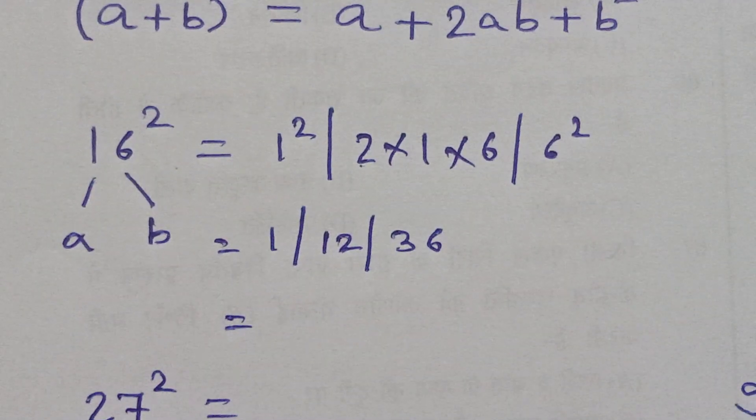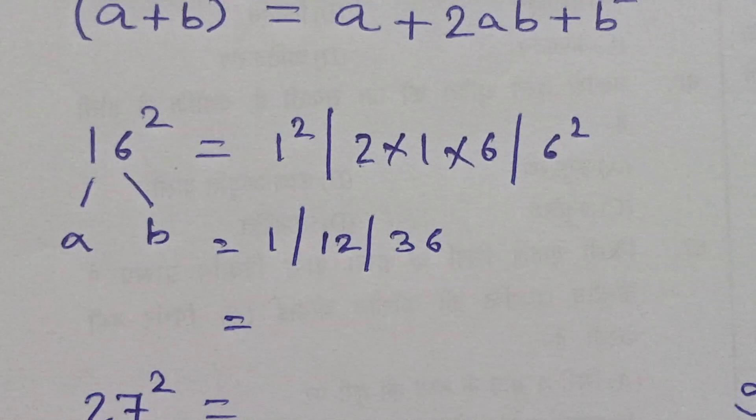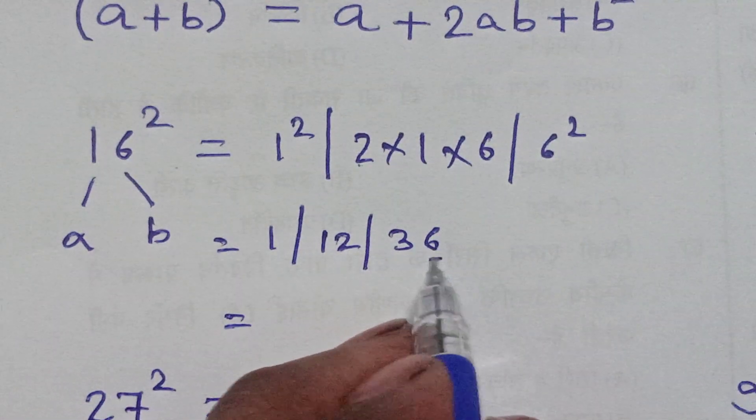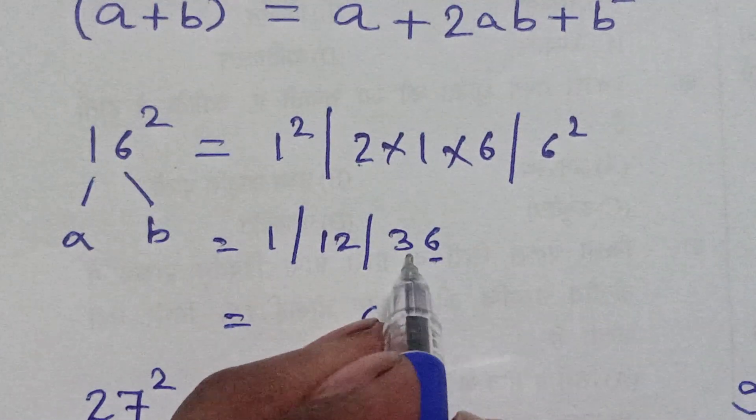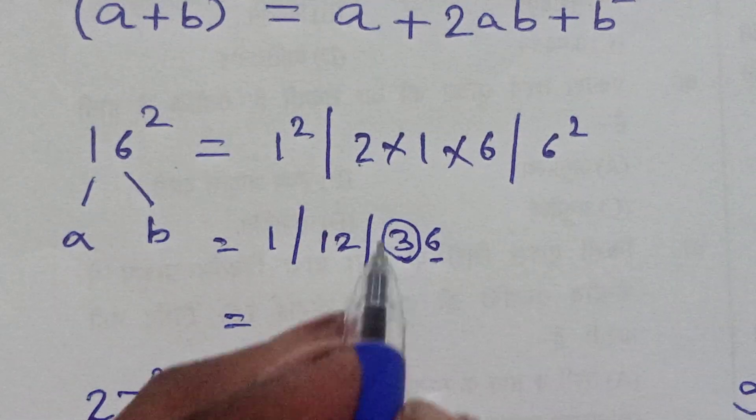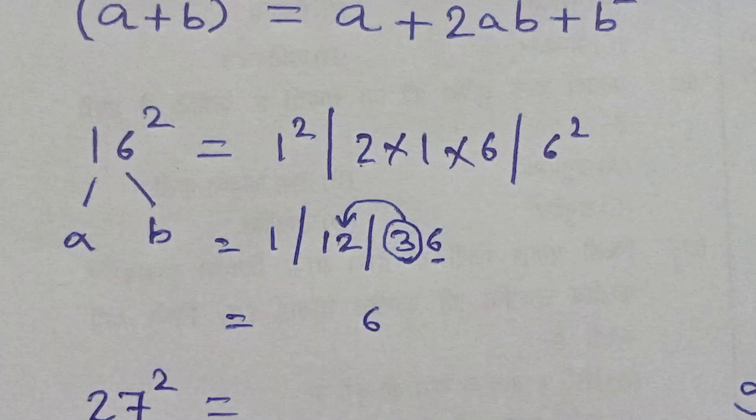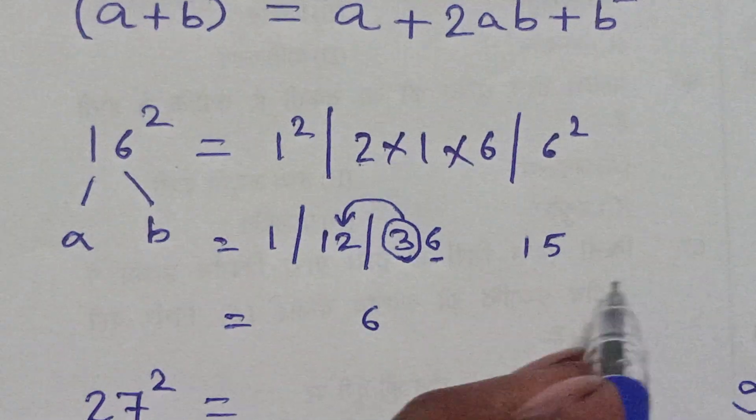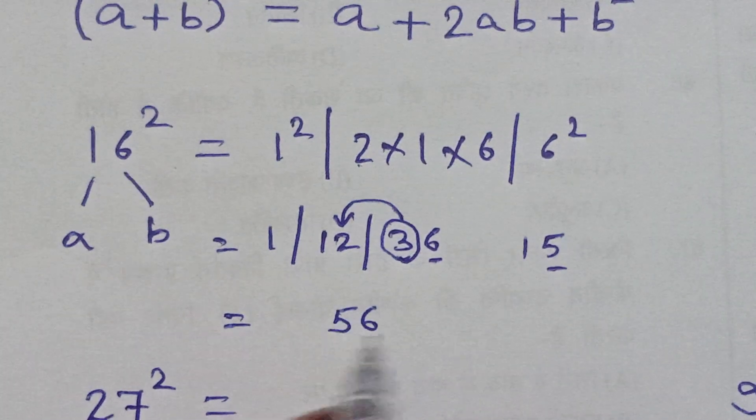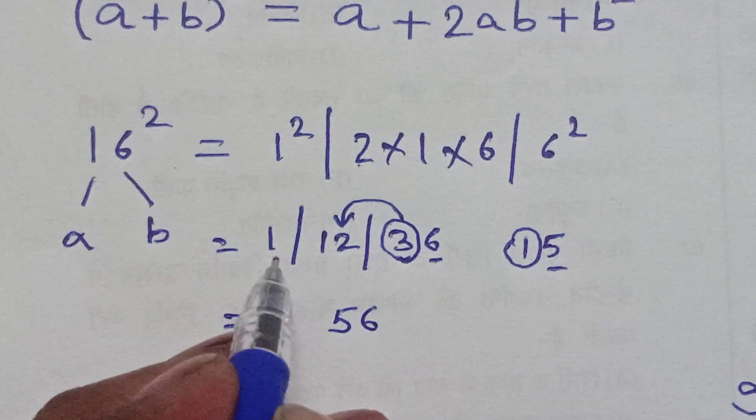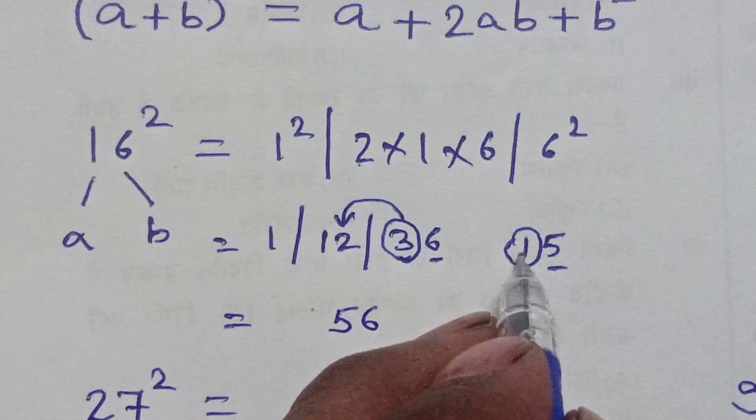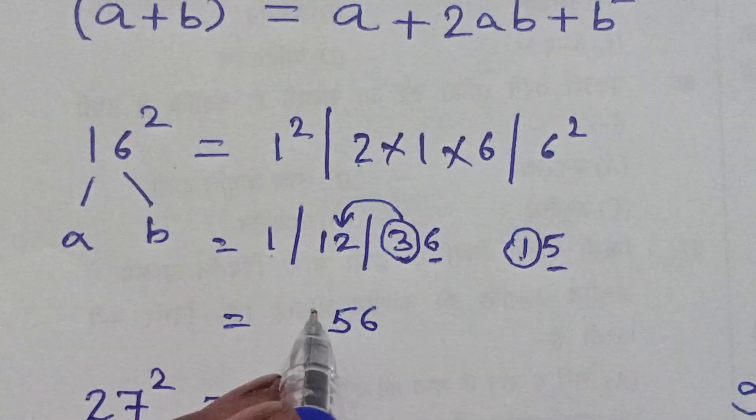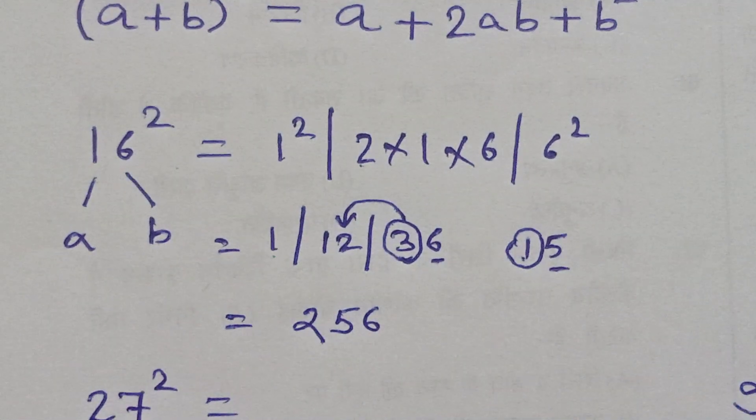Writing answer we take last digit number, here last digit is 6, 3 is remaining then add in 12 then we get 15 and here last digit is 5. 1 is remaining, add in 2, 1 is remaining, add in 1 and 1 and 1, 2, then 256 is right answer.